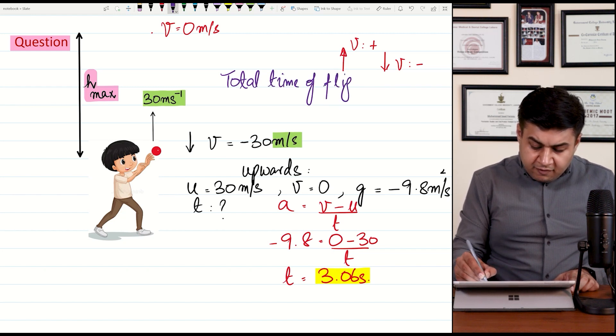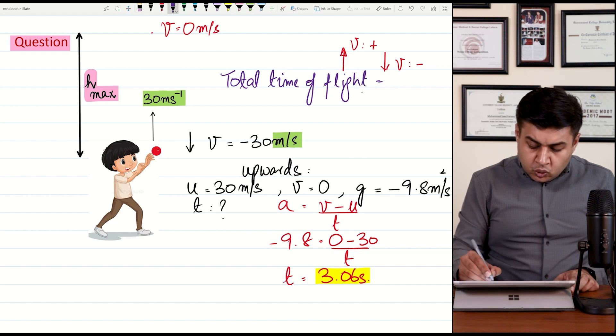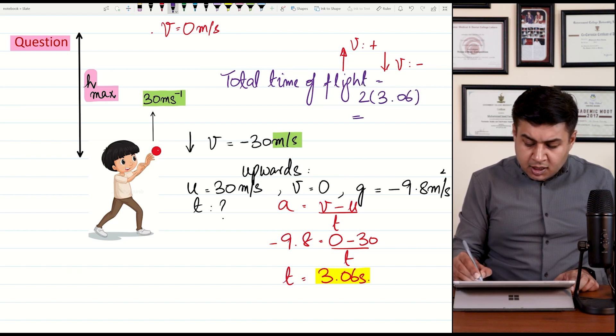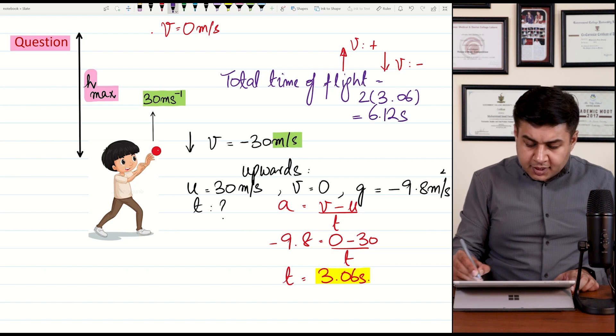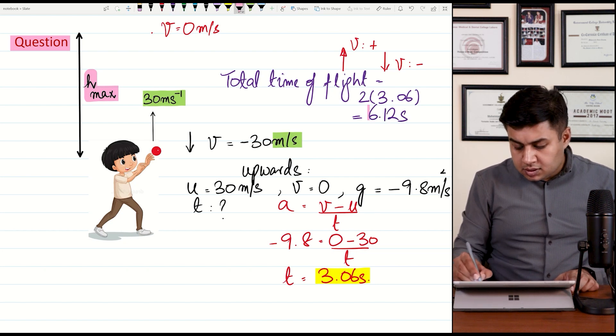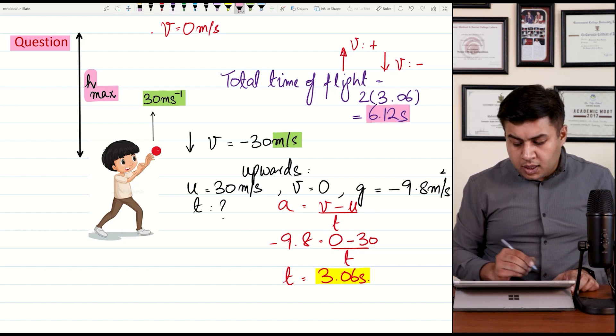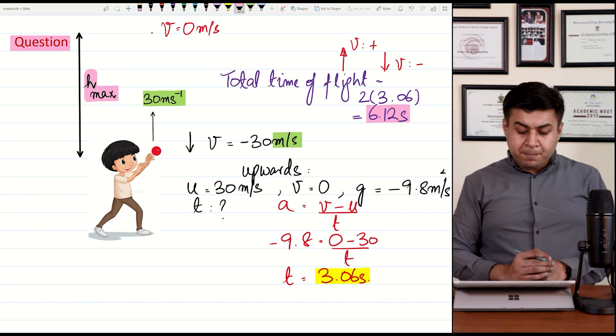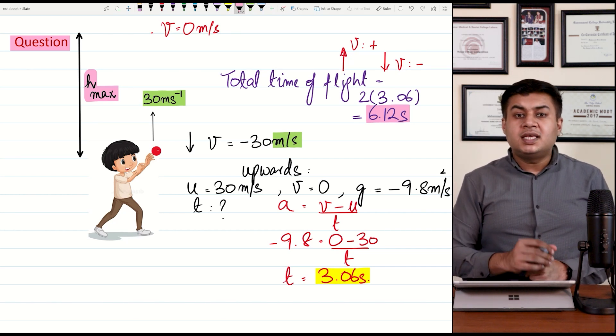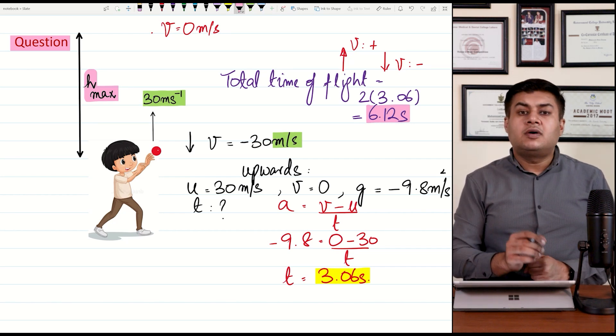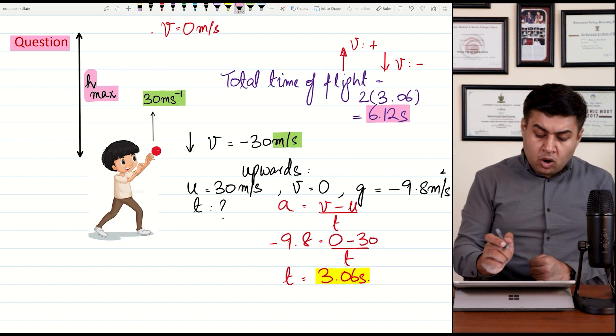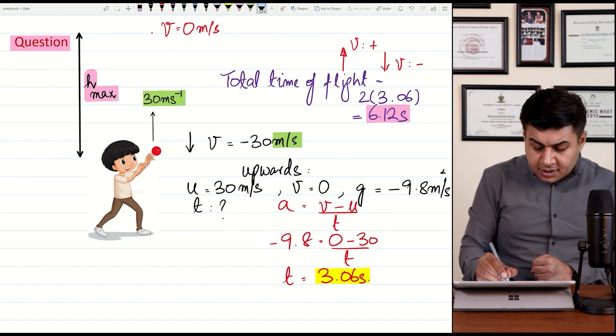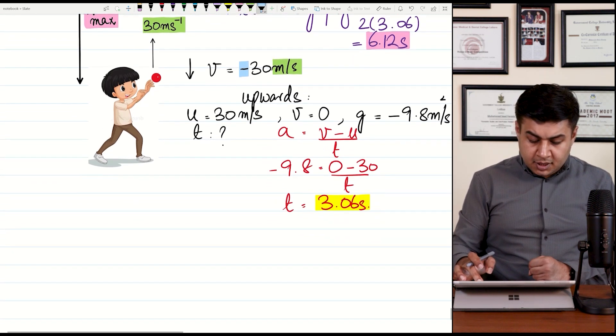So ball is reaching maximum height in 3.06 seconds. So ball jitna upward journey mein time lagaegi utna hi time it will take to come back. So what is the total time of journey? You can also call it total time of flight. Toh aapki value aa gayi. So total time of flight is 2 times 3.06 and that time is coming out to be 6.12 seconds. Thik hai? Aur ball kis velocity se return back karegi, velocity of 30 meters per second but opposite direction, jisse we will say minus ke saath, ye negative sign likhein. Thik hai?